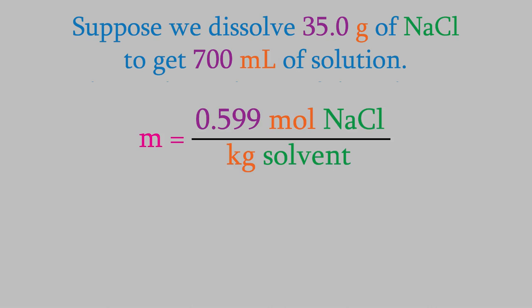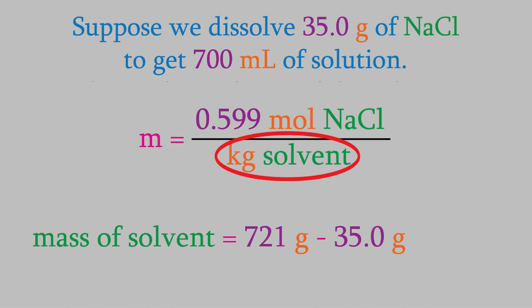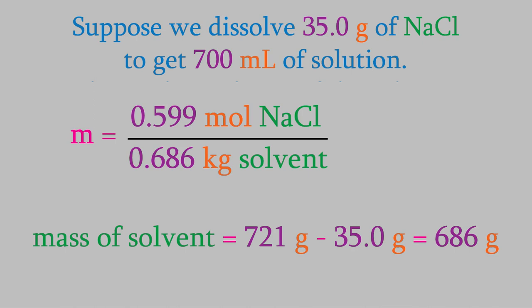What we want in the denominator is the mass of the solvent, not the mass of the solution. The solution is made up of the solvent and solute, so to get the mass of the solvent only, we subtract the mass of the NaCl from the mass of the solution: 721 grams minus 35.0 grams gives us 686 grams of solvent, or 0.686 kilograms. We use that in the formula for molality, which gives us a molality of 0.873 m. The symbol for molality is a lowercase m — make sure you don't use a capital M, which is the symbol for molarity. Using the wrong unit is worth points on your homework and tests.